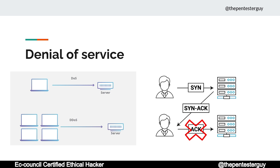During a DOS attack, you perform a ping to a server triggering the TCP three-way handshake. You send a SYN packet to the server; it responds with SYN-ACK, but you never send your ACK back. The server can't complete the handshake, so you keep sending SYN packets, getting SYN-ACKs, and never acknowledging — preventing the server from responding to legitimate connections. When using multiple devices or a botnet, this becomes DDoS.